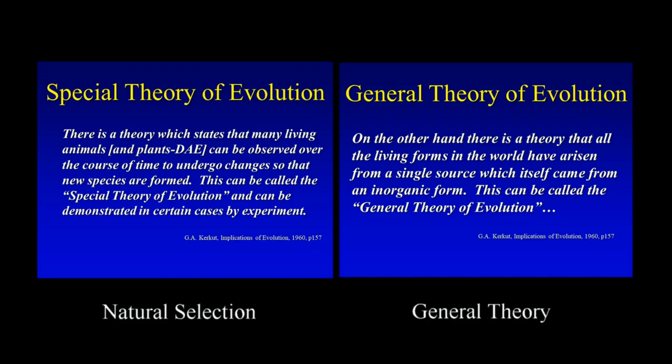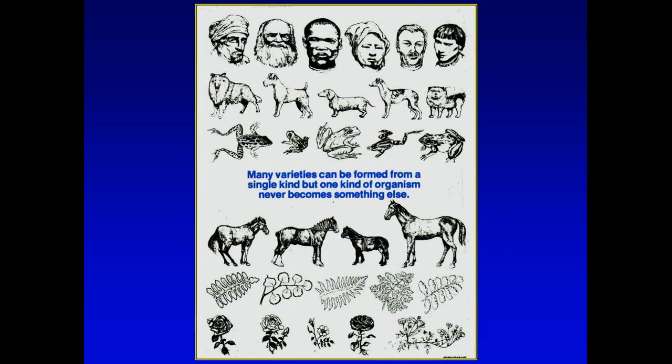You can't see the supernatural if you don't understand the natural really well. So these are just the definitions again: you have horse kind, fern kind, carnation kind, frog kind, dog kind, and people variations. Mankind is clearly a species, and I think God did it that way for a reason. Man was unique — out of all the things that God created, man was unique.